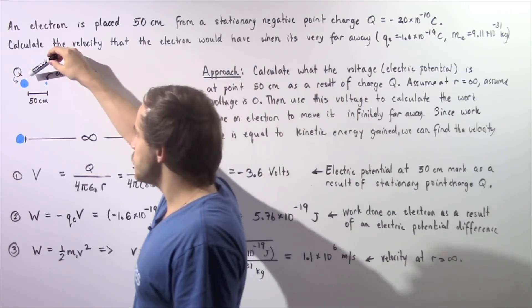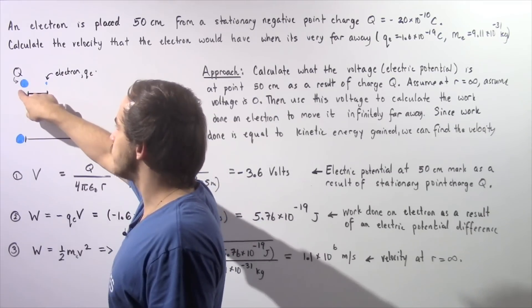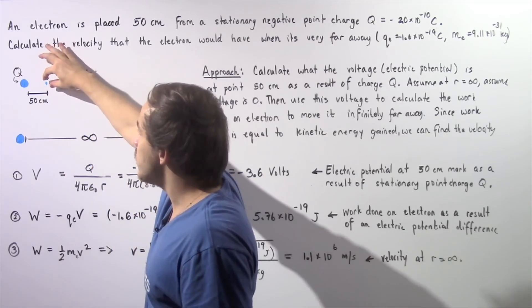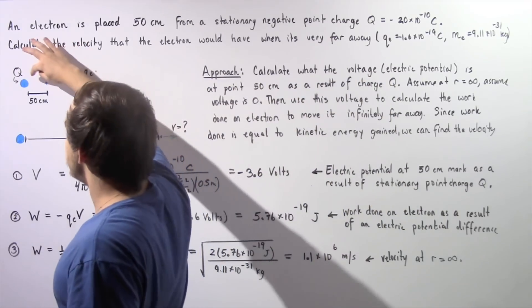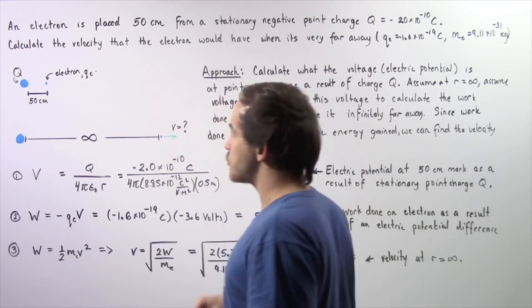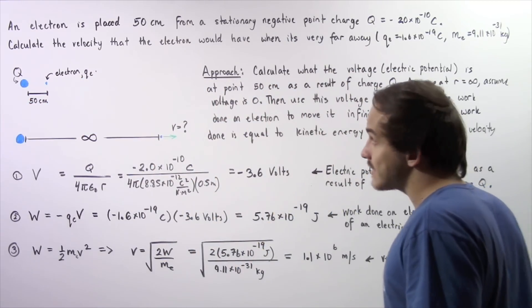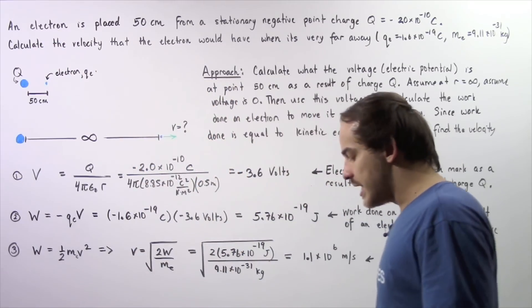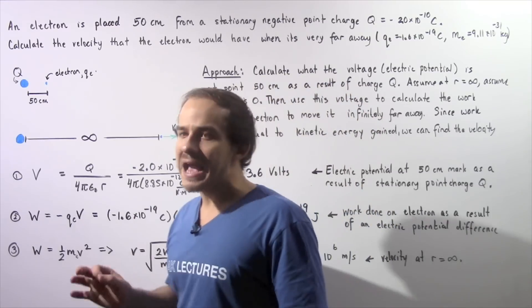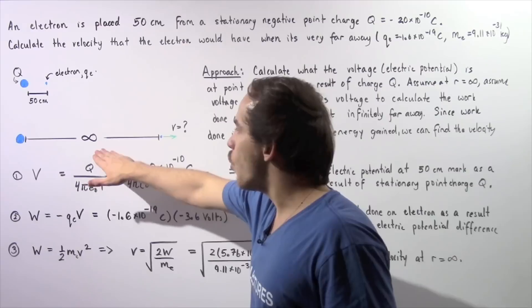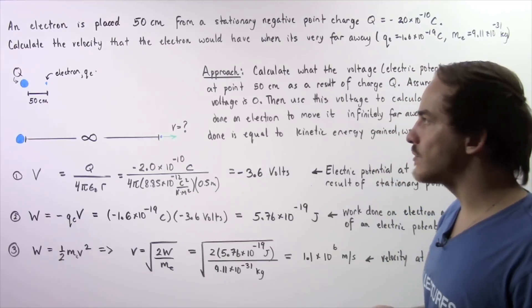We have our stationary charge Q and we place one electron 50 centimeters from that point charge. When we release this electron, it begins to travel as a result of the force it feels from the stationary point charge. The electron travels in the positive direction along the x-axis while the charge remains stationary. Eventually, at some very far away distance, our electron will reach a maximum velocity. We'd like to calculate what that velocity is when the electron is infinitely far away.